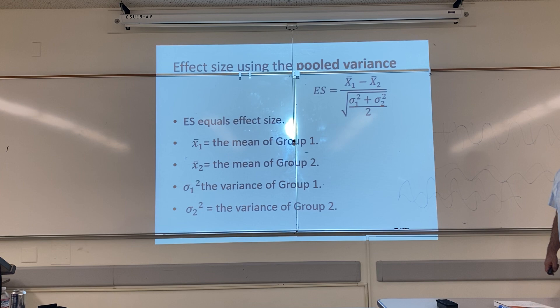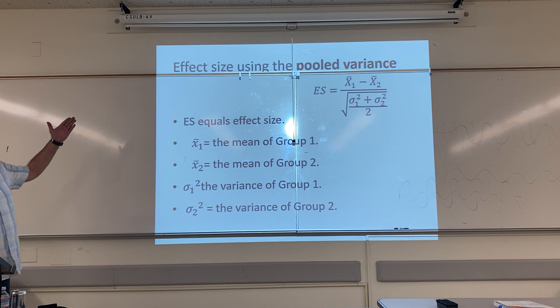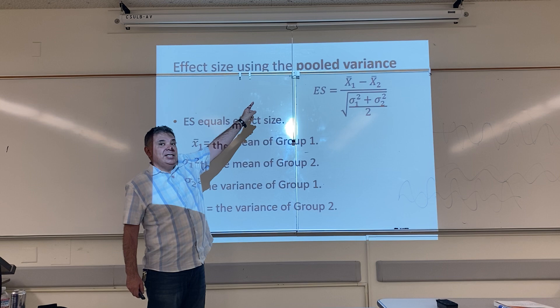The opposite is true when working with large sample sizes — it's possible to find a very, very small effect size that is actually significant. Your formula also has another way to find effect size. This is known as the pooled variance. What does pooled mean? It's a way of combining or adding things.